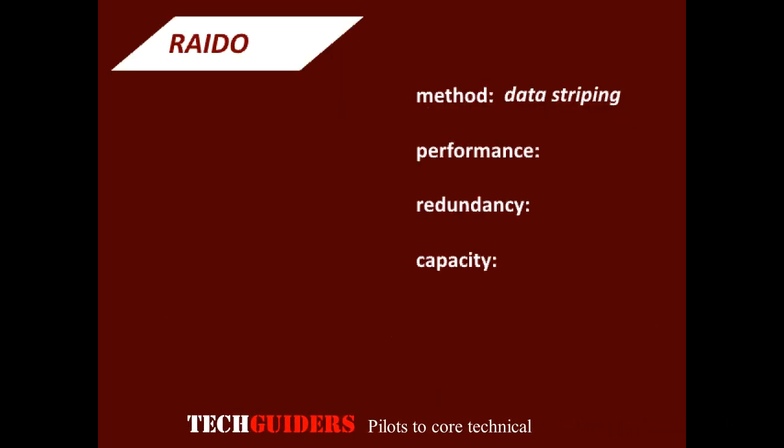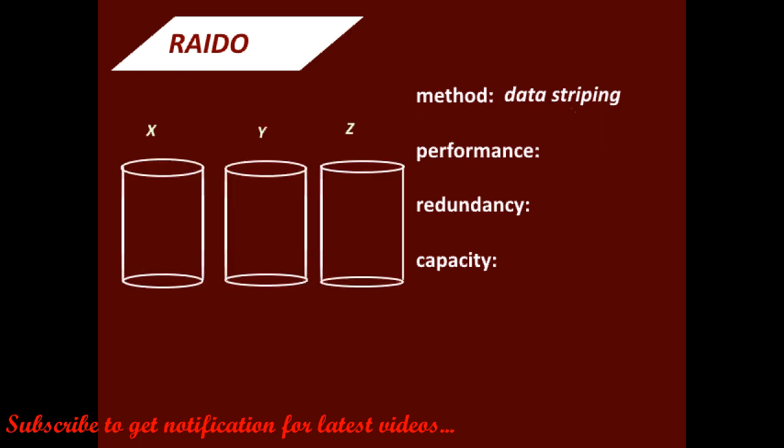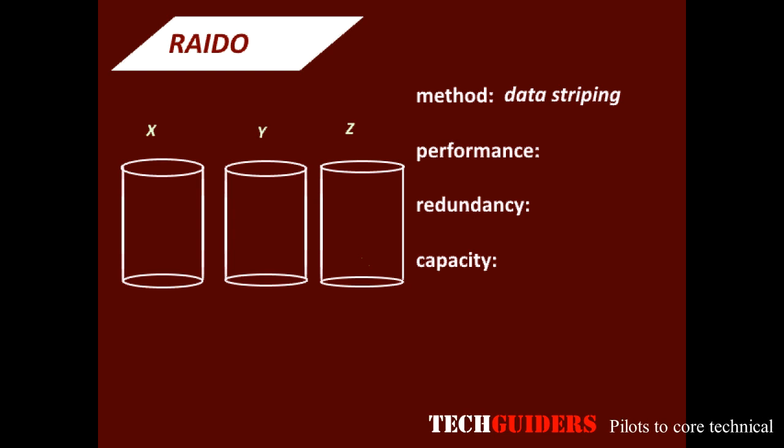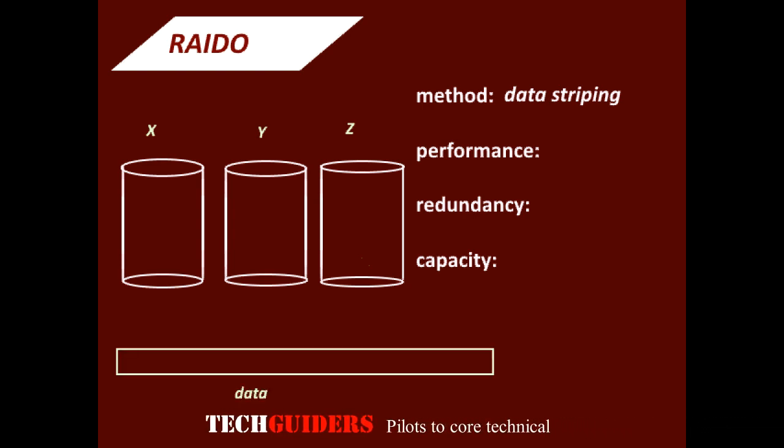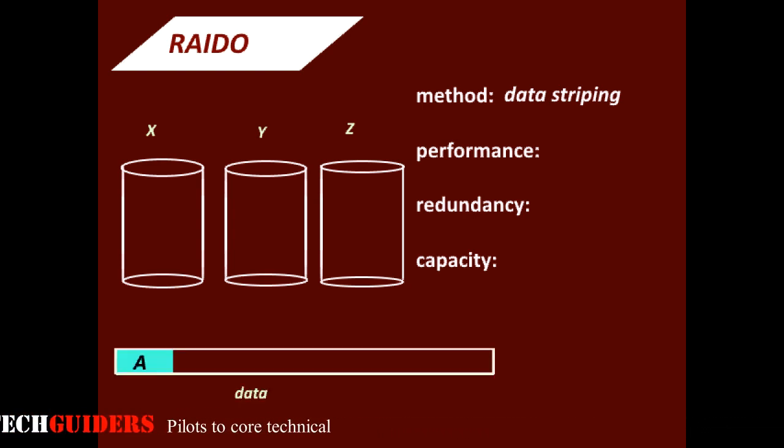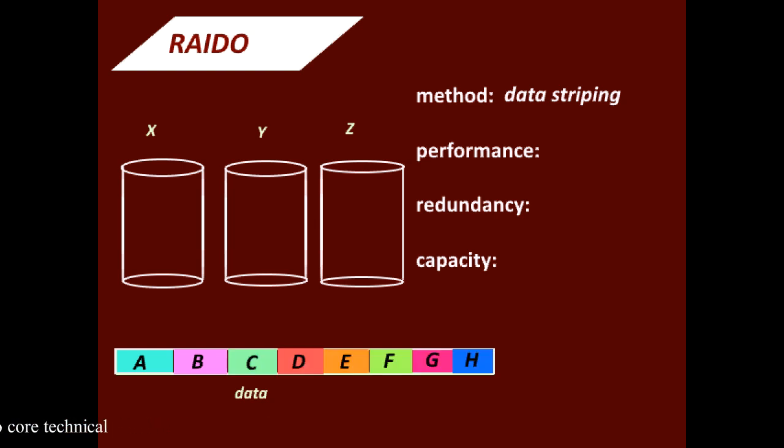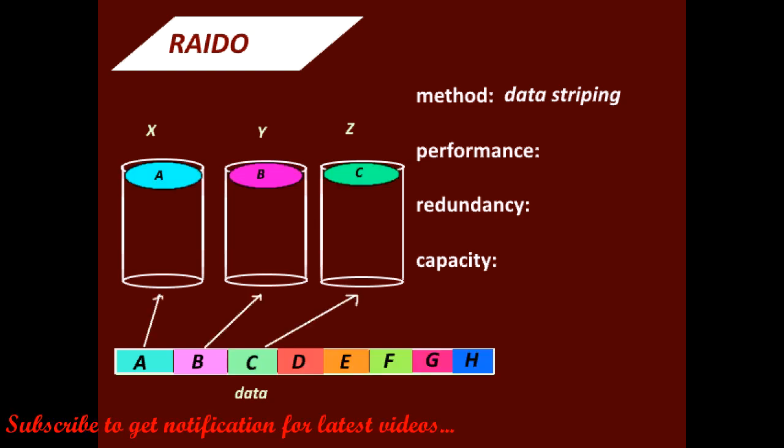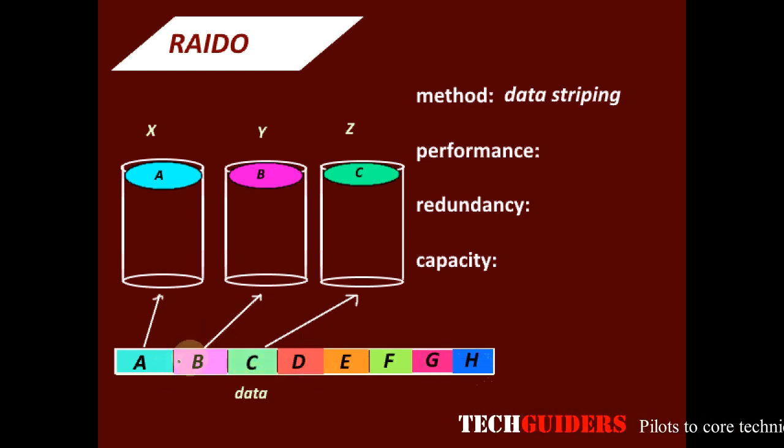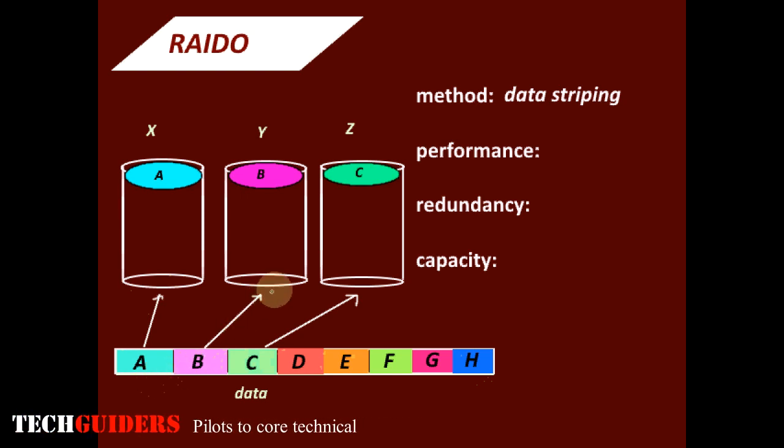RAID 0. RAID 0 makes use of the method of data striping. It stripes the data across two or more disks in the RAID set. That is, the sequential data to be written onto the disk will be split and placed among multiple disks. In other words, the data will be broken into different parts, say for example blocks, and the blocks are written alternately to all the disks in the RAID set.